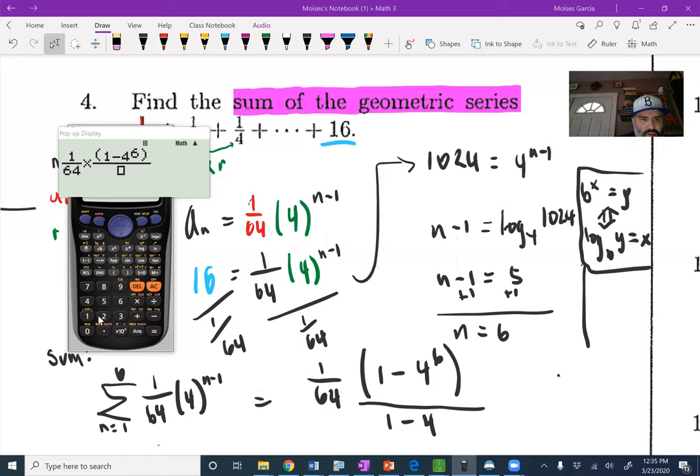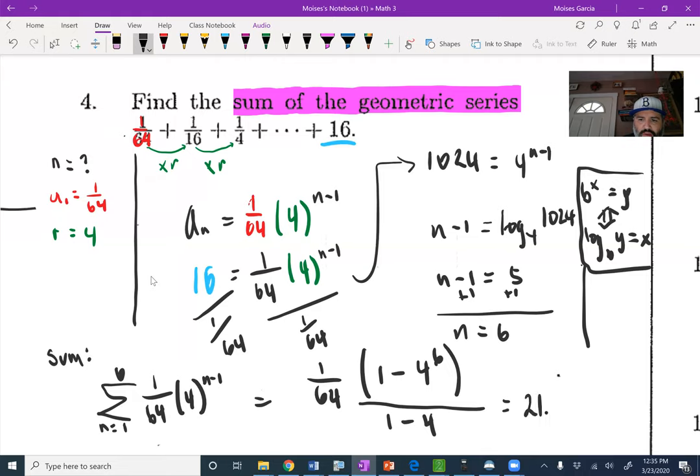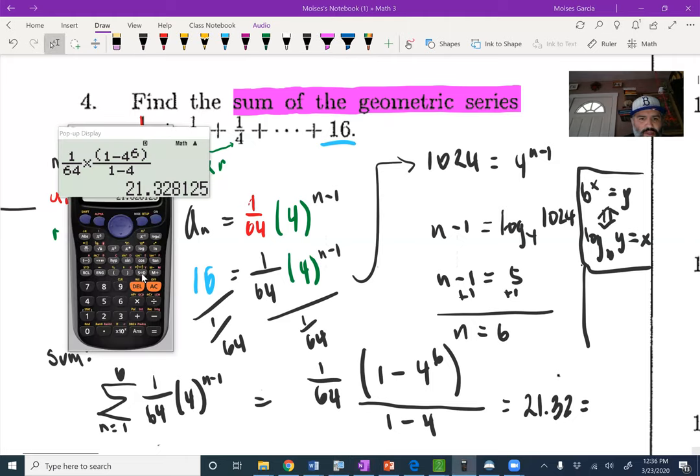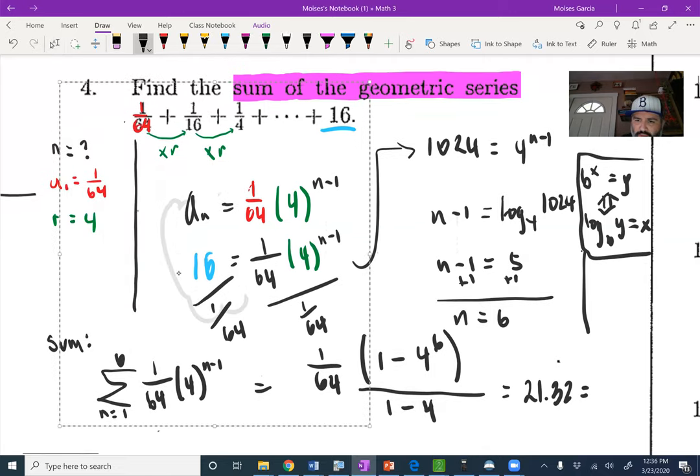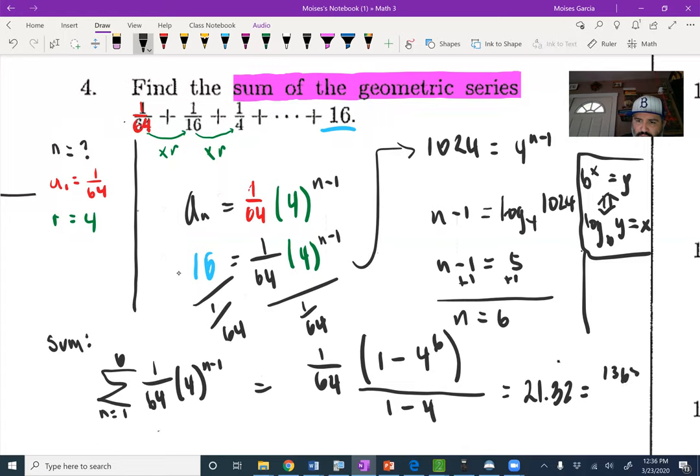That gives me about 21.32, and the fraction answer to this is 1365 over 64. That's ultimately my sum here.